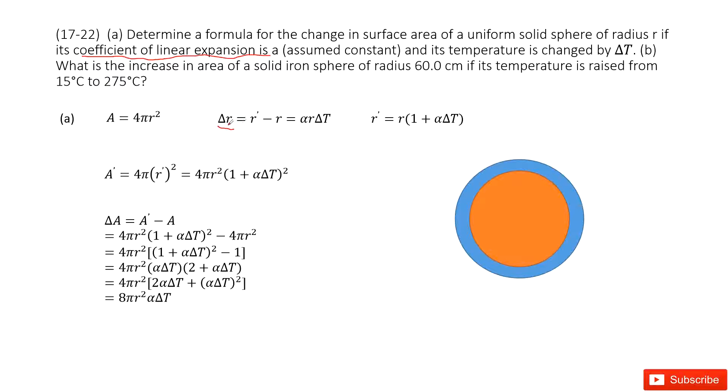So Δr = r·α·ΔT, where α is the coefficient of linear expansion. And this Δr is r' minus r, the final radius minus initial radius.